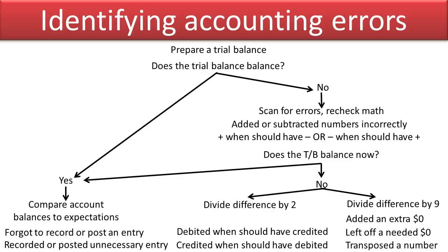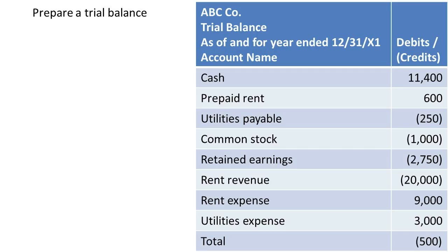In the remaining slides, I'm going to go through different examples related to this decision tree to help you better comprehend what I've just introduced. Here is the ABC Company trial balance, which I'll use as the basis for all remaining examples — though sometimes I'll change numbers to create errors.